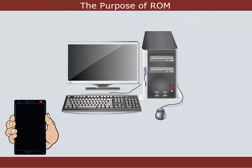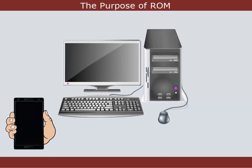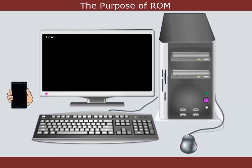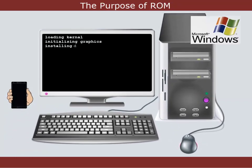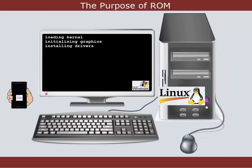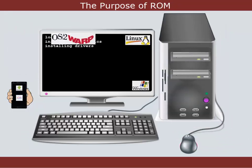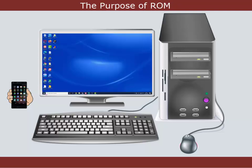When you switch on a computer or a mobile phone, the operating system is loaded. This might be Windows, iOS, Linux, Android, or one of many others. The operating system is needed to manage the running of software and the handling of hardware. Once it's loaded, all of your desktop settings are retrieved and the operating system will set up your device just the way you like it.